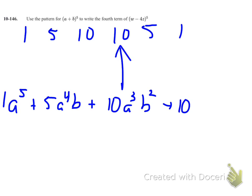plus 10a squared b to the third. Remember our patterns, that our exponents always add up to our n number. So for this next one, I have a 4 and a 1, that adds up to 5.